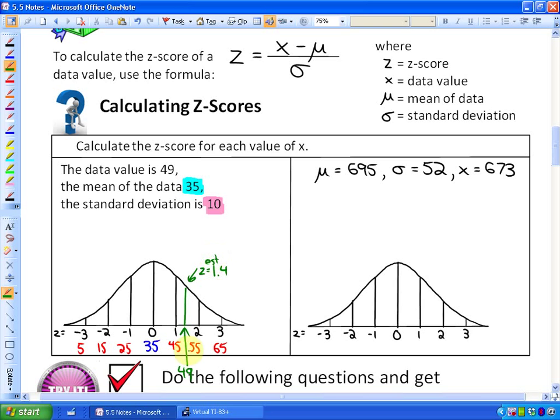Now to actually calculate the z-score of 49, what we would do is use the z-score formula. So the actual data value is 49, so if you follow the colors that I'm highlighting in, x is 49. The mean of the data is 35, so this would be 35, and the standard deviation is 10. So in this particular case,